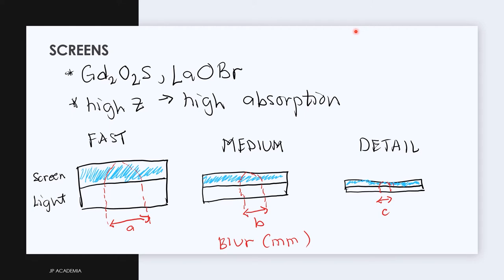On the contrary, a thin screen shown here has a low sensitivity or speed but produces a high visibility of detail due to its lower blur or lower spread shown here.